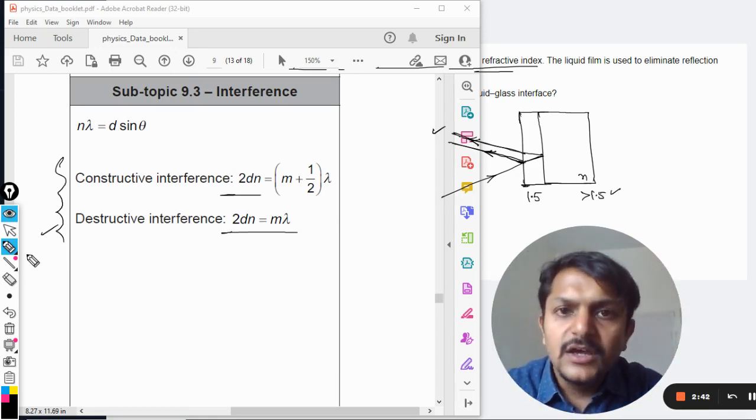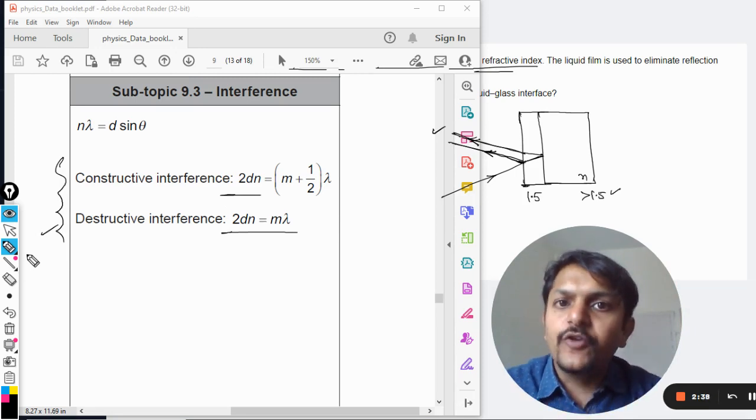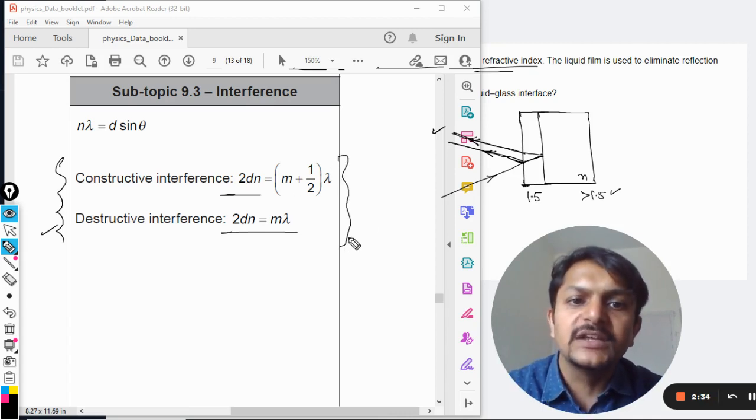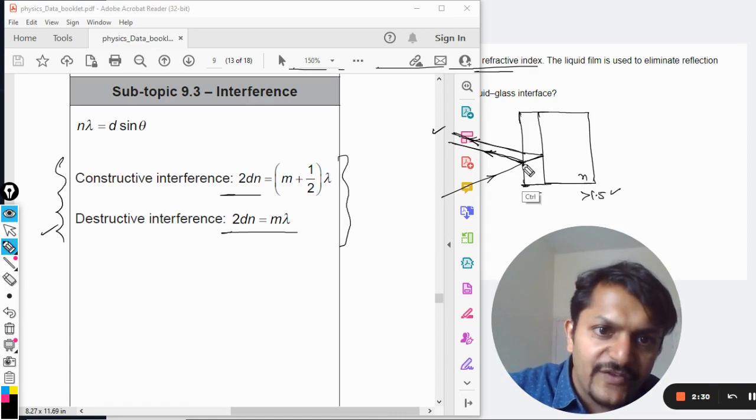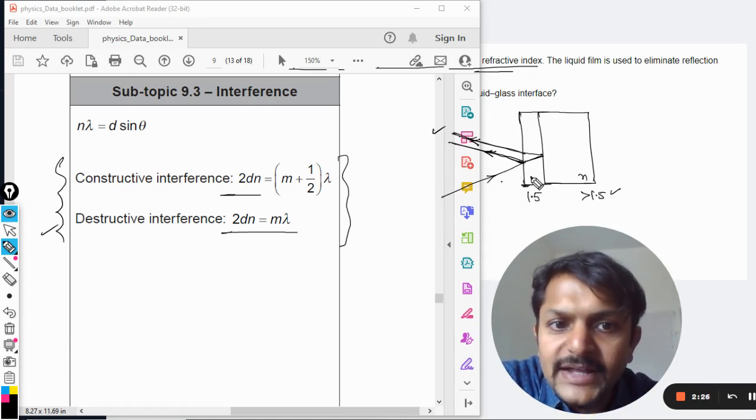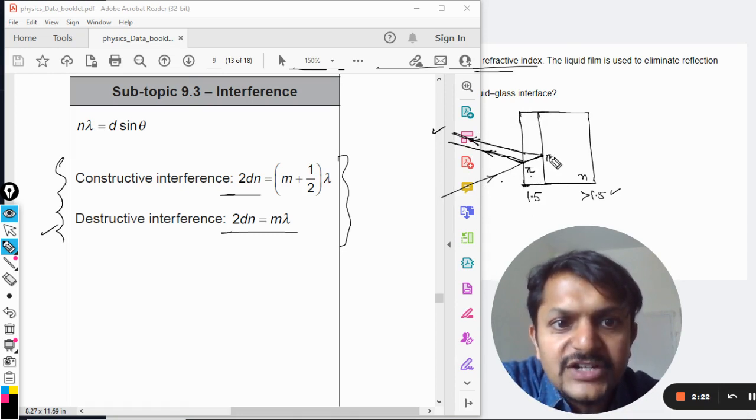But here the condition is that the film should be surrounded by the air on both sides. So the phase change of pi is taking place only for one ray; for the other ray there is no phase change. Then only you are going to use these formulas. But in this particular case, you see this reflection that is taking place here.